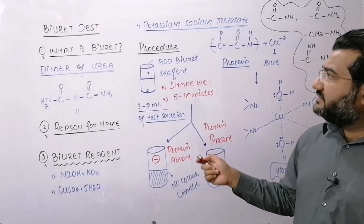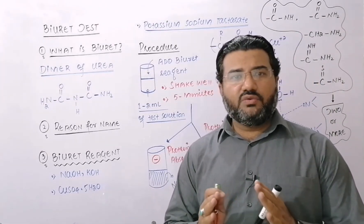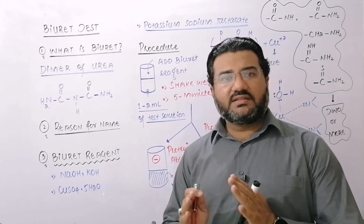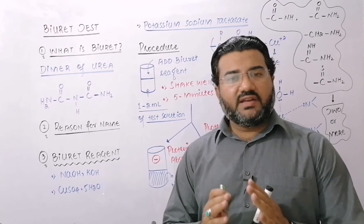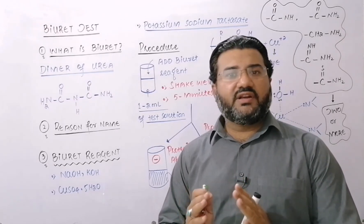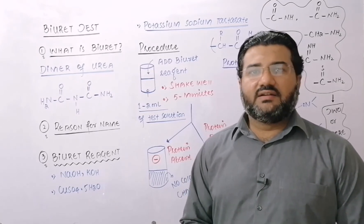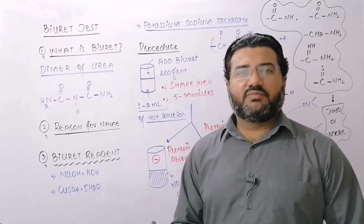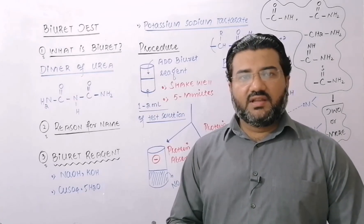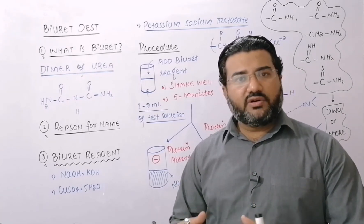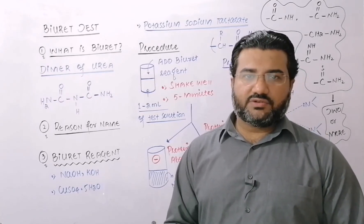Now dear students, what is the practical application of this biuret test? The biuret test can be used to determine the concentration of the protein in the urine samples. Or even the concentration of the protein during different spectroscopic analysis can also be determined. And during that spectroscopic analysis, we also perform the biuret test. So basically, it is for the determination of the amount of the protein or to check the presence or absence of the protein in the test solution.